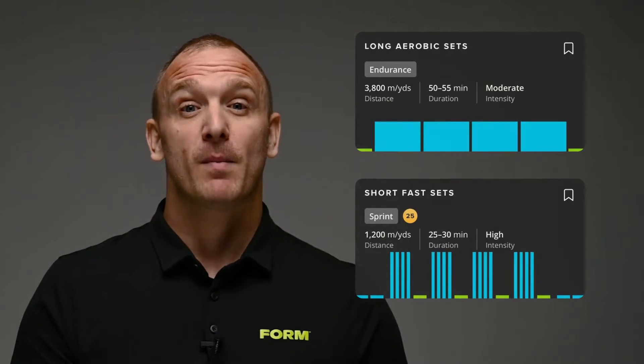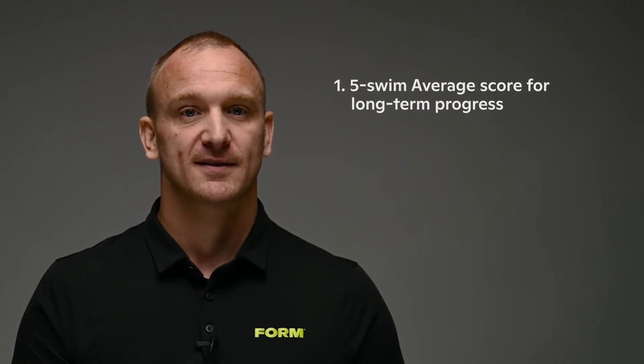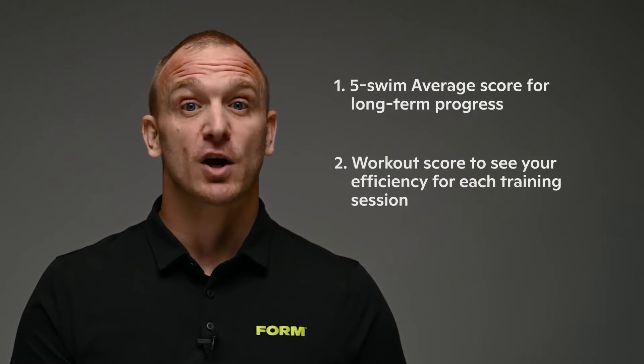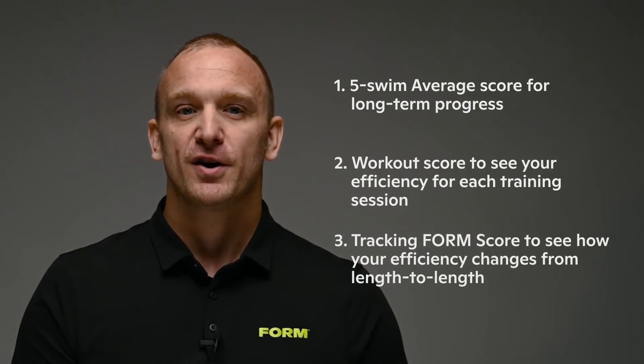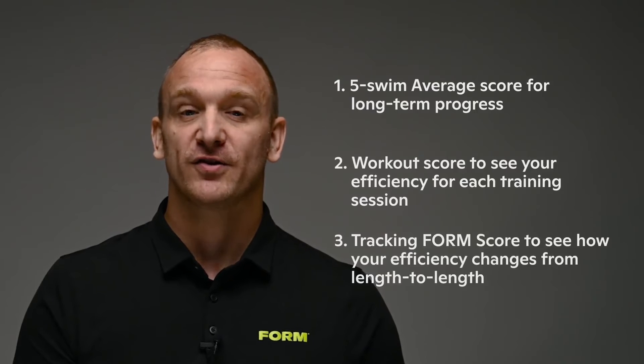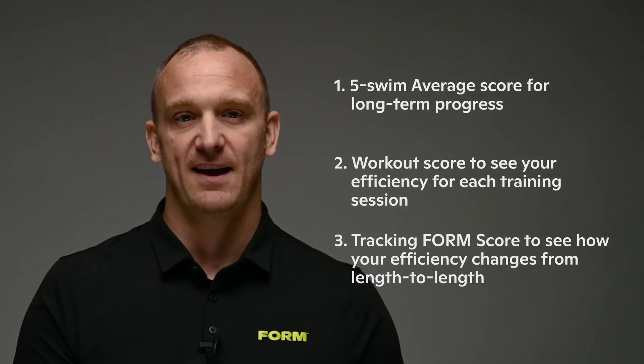Remember that you can use your form score by: first, following your five-swim average score to see your long-term progress; second, checking your workout score to see your efficiency for each training session; and third, tracking form score in the goggles and in the app to see how your efficiency changes from length to length. Now that you know how to use form score, check out our other form score videos to better understand how to apply form score to your training in order to become an even better, faster swimmer.